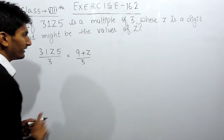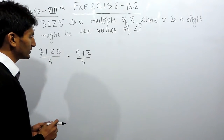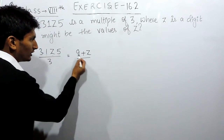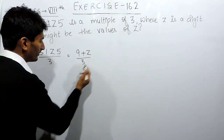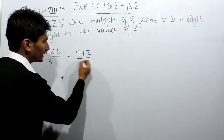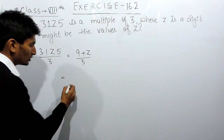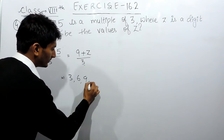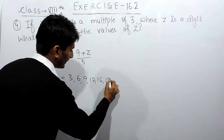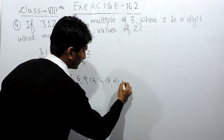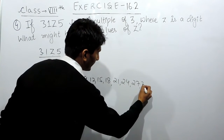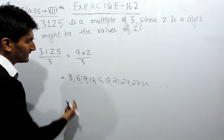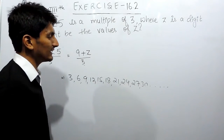Now, we don't know the value of z — that is what we are going to find in this question. So, if the sum is divisible by 3, what are the possible numbers which are divisible by 3? The first possible number is 3, then 6, 9, 12, 15, 18, 21, 24, 27, 30, and so on. These are the multiples of 3 — the numbers which are completely divisible by 3.